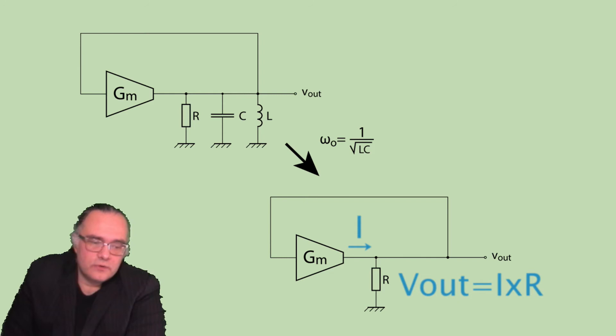Now the voltage Vout will be the current times R. And what is the current? The current is the input times the GM.